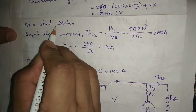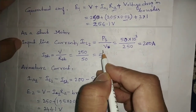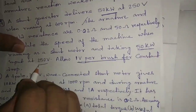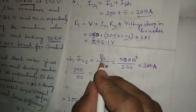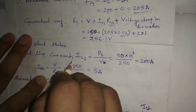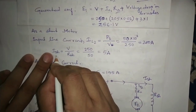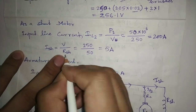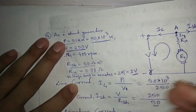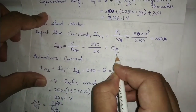Now for the motor case, as a shunt motor: the input line current IL2 equals P2 divided by V. The motor input is 50 kilowatt (50 into 10 to the power 3 watt) at 250 volt, giving IL2 equal to 200 ampere. Similarly, the field current Ish equals V by Rsh — V is 250 volt, Rsh is 50 ohm — so Ish equals 5 ampere.